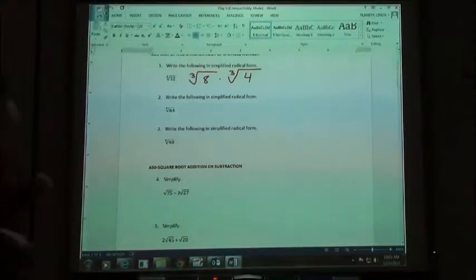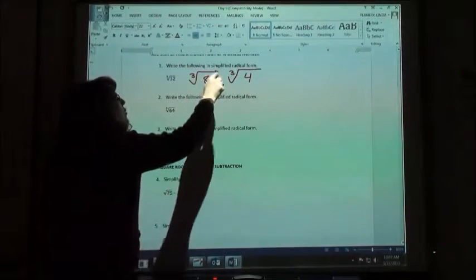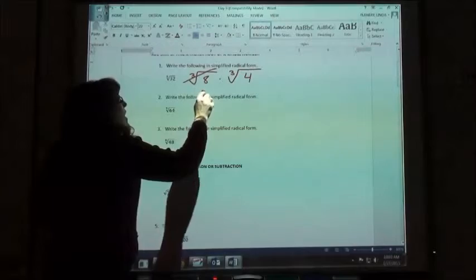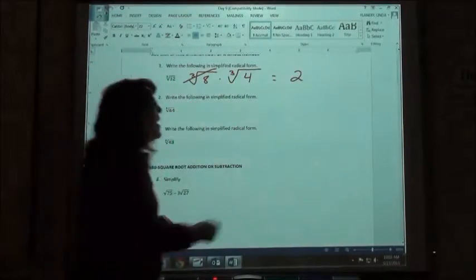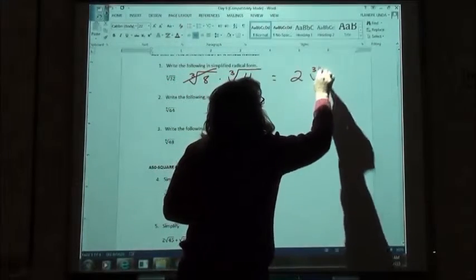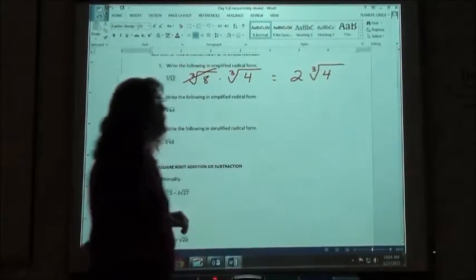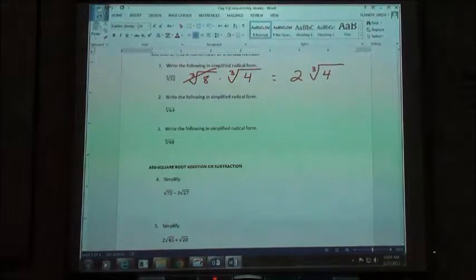So again, like the square roots, this should be a perfect cube. It's going to come out and it's going to be a nice whole number, a plain old 2 in this case. This is going to go behind it, the cubed root of 4. So we get 2 times the cubed root of 4 for our answer in simplified form.